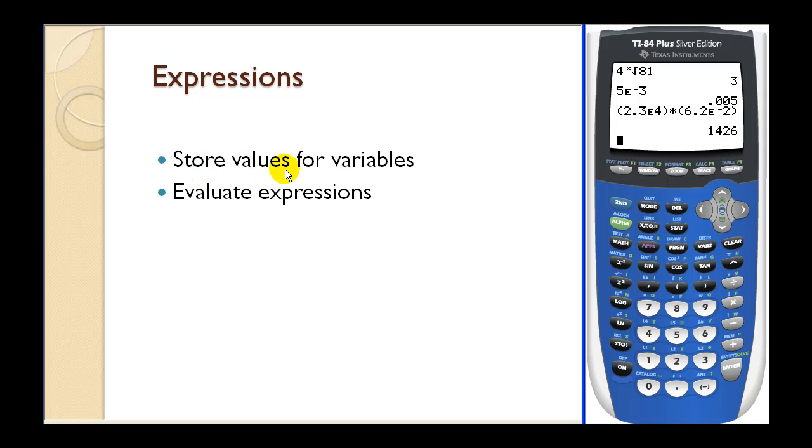Let's talk about how you can store values for variables. So let's say, for example, I want to store five for the variable A. I press five. Here's the store key. And now I have to find the letter A. You can see the letter A in green here. So I have to press alpha math. Enter. Now five is stored for A.